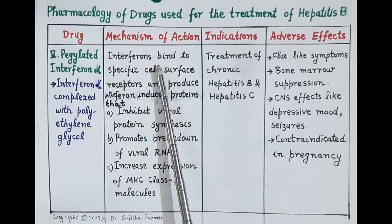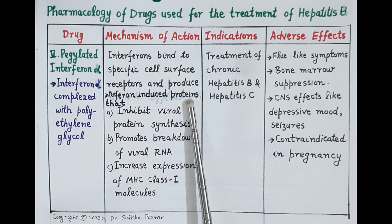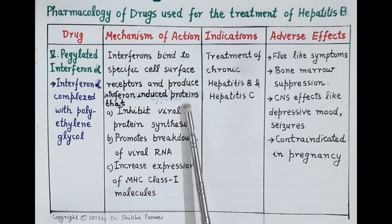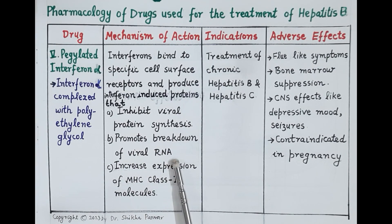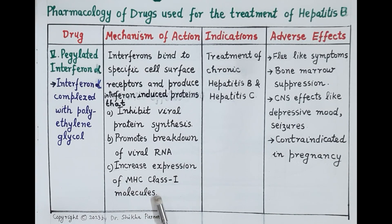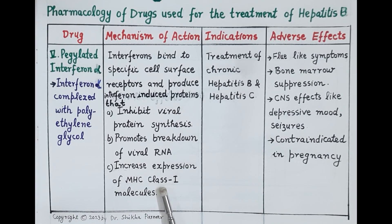Regarding mechanism of action, interferon binds to specific receptors on the surface of the cell and induces production of interferon-induced proteins. These proteins exert antiviral effects by inhibiting viral protein synthesis and promoting the breakdown of viral RNA. In addition, interferons increase the expression of MHC class I molecules on the surface of infected liver cells, which causes apoptosis — programmed cell death — of infected liver cells, leading to destruction of virus-infected host cells and stopping further spread of infection.